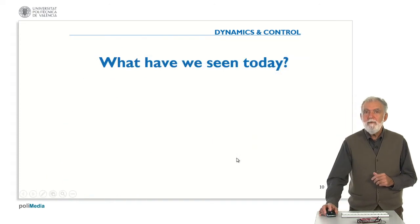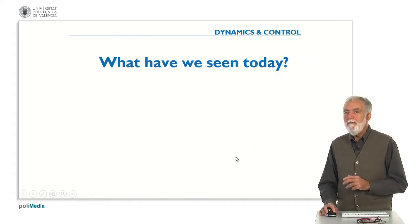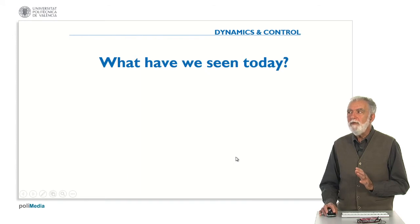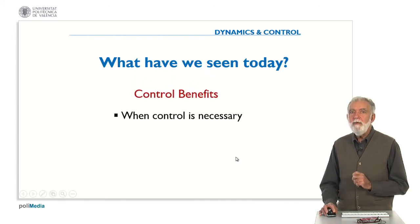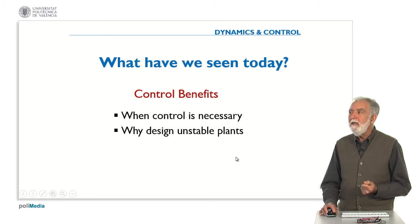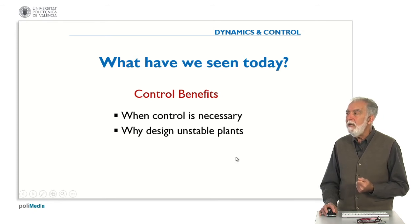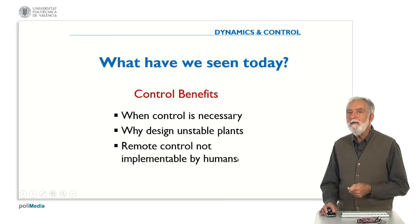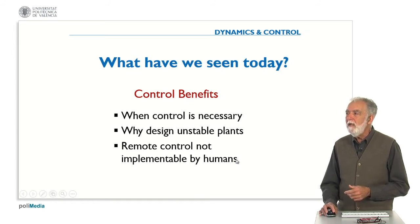So what have we seen today? We have seen some of the benefits of control, specifically those related to when control is necessary: because we have plants that have been designed in an unstable way to achieve better performance, or because there is remote control which is not directly locally implementable by humans.